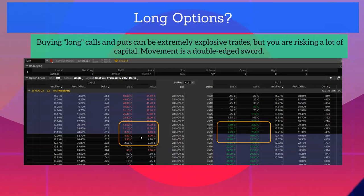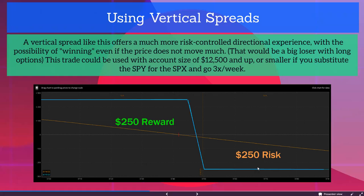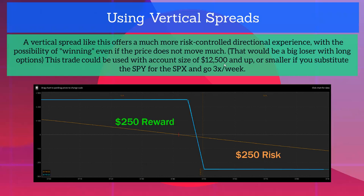Movement is a double-edged sword — you can make or lose a lot of money. Instead of long options, we can use vertical spreads. What I like about these is you don't have to be exactly right. We can set up a reasonable reward-to-risk, starting at 50/50. We could do this trade with an account size of $12,500 and up assuming the two percent rule, or use the SPY, which is ten times smaller in notional value. The whole point is to get in, get your fair share, and get out the same day.